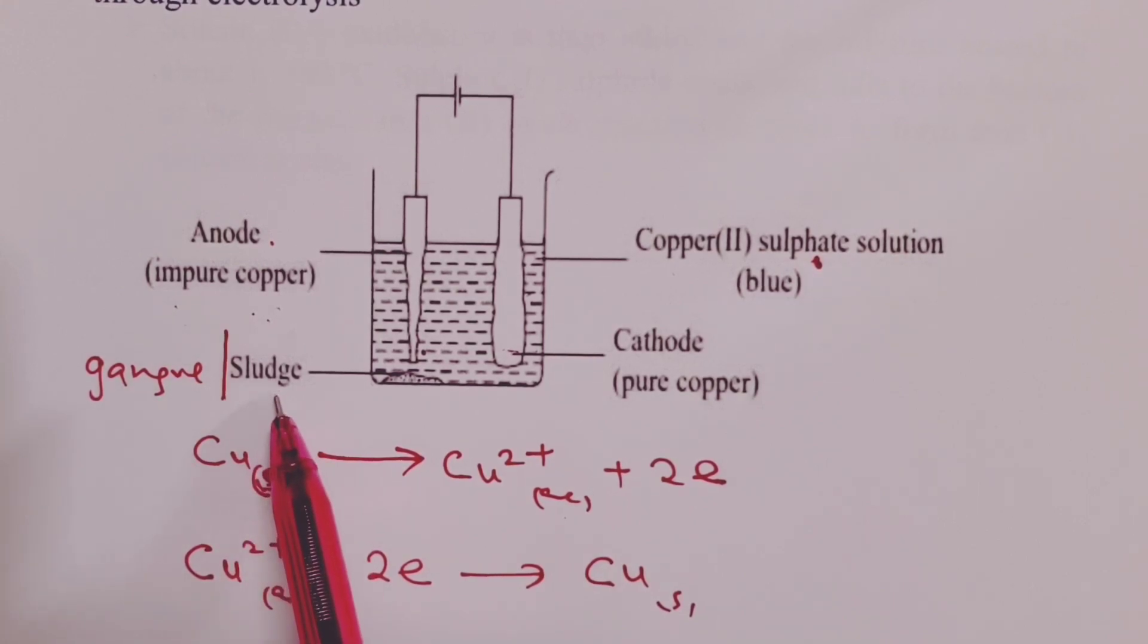The sludge here usually contains some precious metals as well, including gold, silver, or even platinum. These precious metals are usually purified from the sludge at some point during extraction of copper.